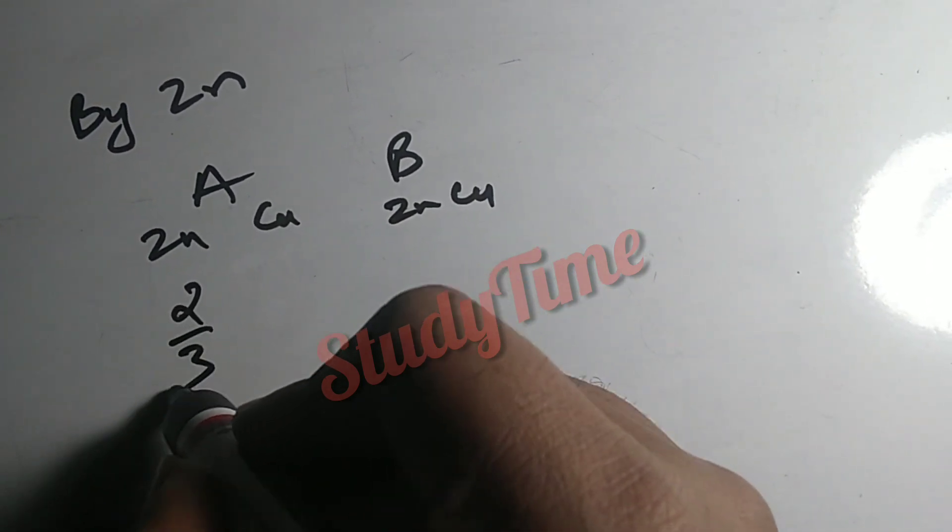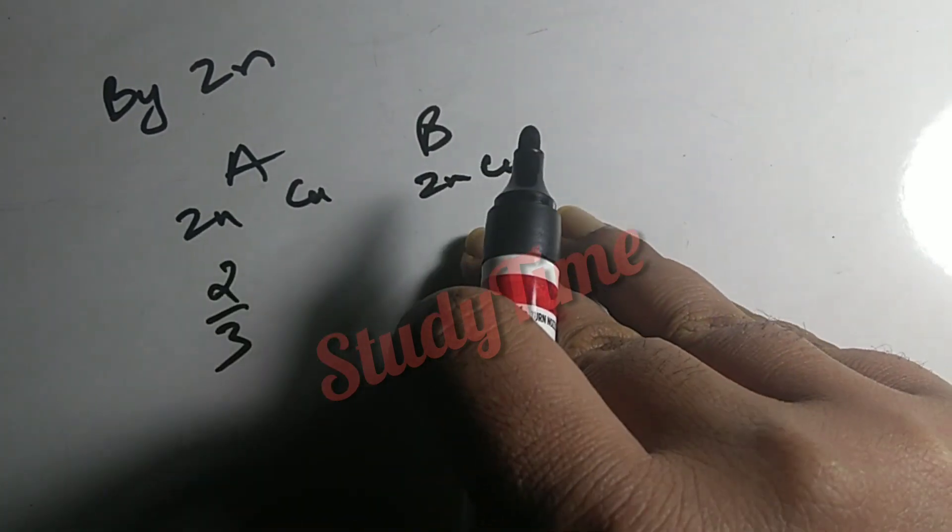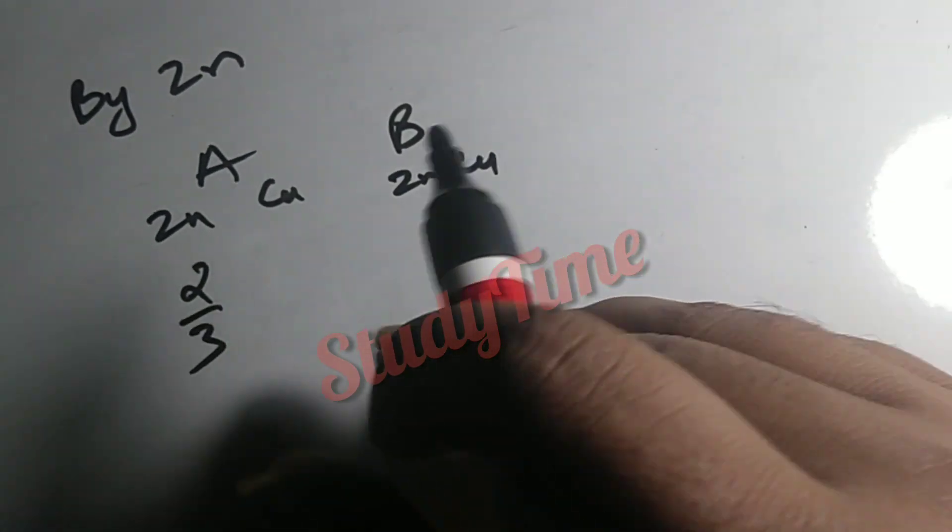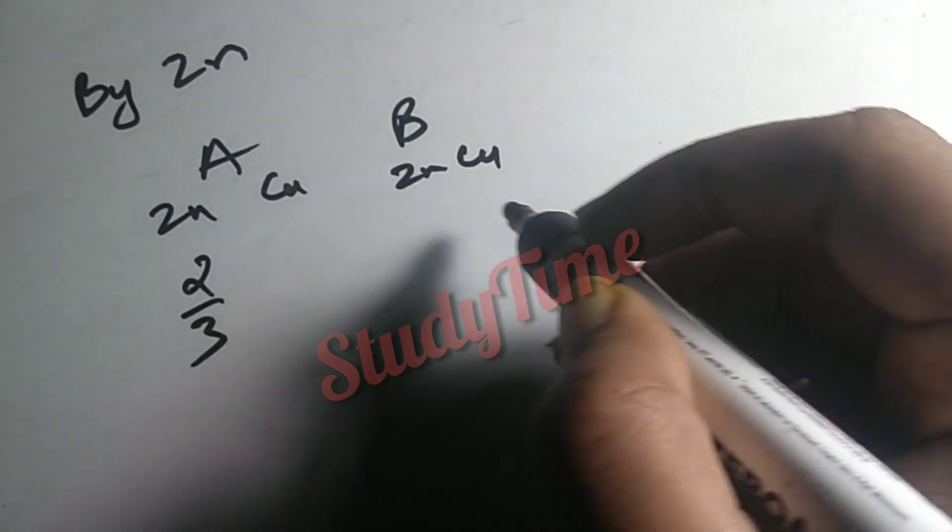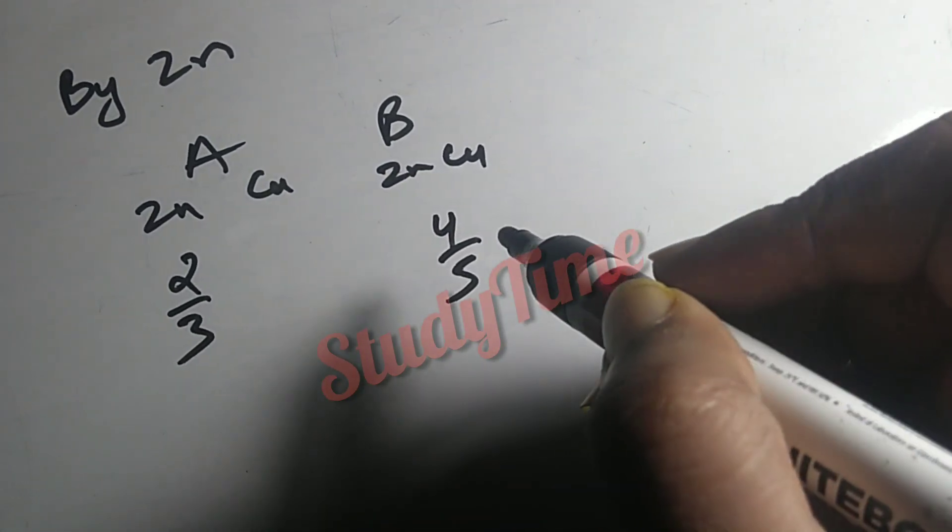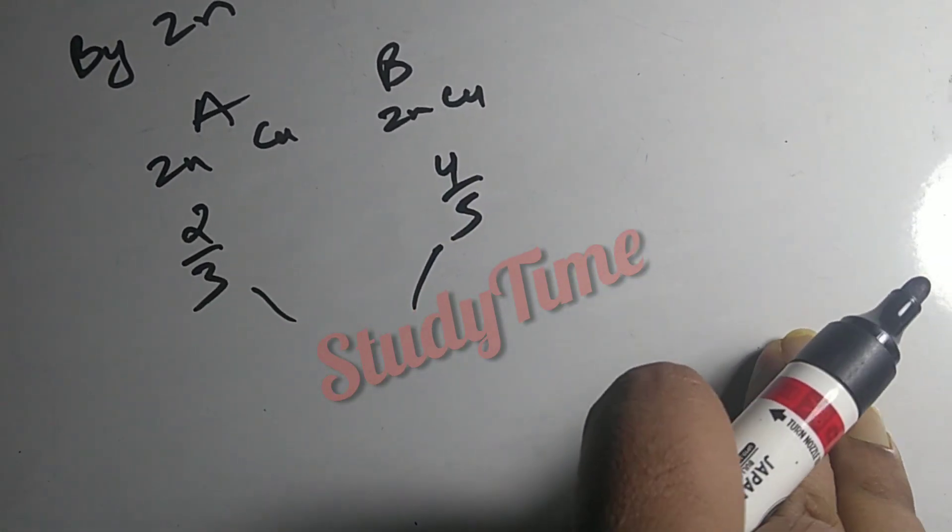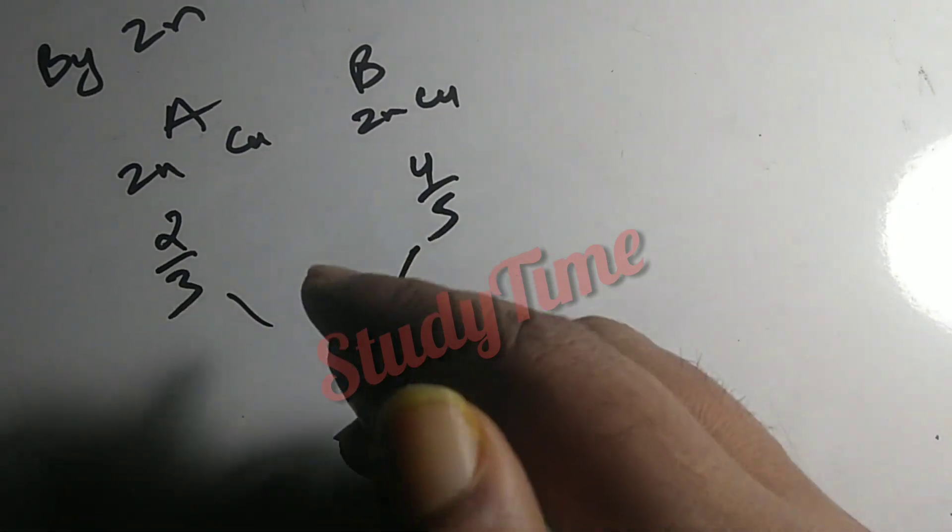We have 2/3, a ratio of 2/3, total 3. And we have a ratio of 4/5, so we have 3/4.